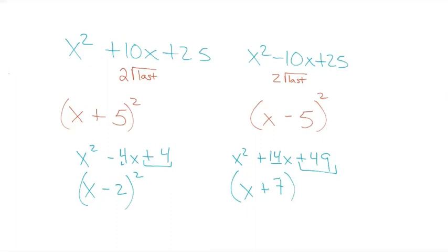Those are our three basic patterns for factoring. For homework, you're doing 1 to 38 from the left two columns and then problems 40 and 41 — there are a lot of problems because you need to practice. Actually, I'm going to change the assignment: homework 113a is going to be problems 1 to 17, left two columns. I'll stop the recording here.